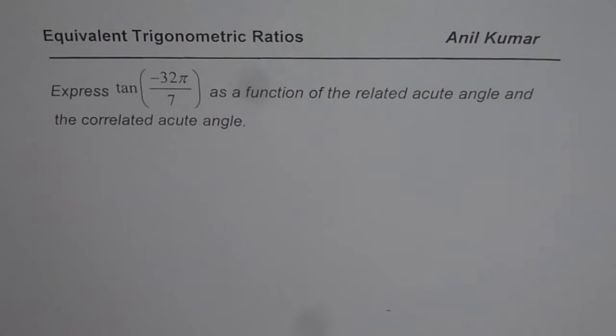Question is, express tan of minus 32π divided by 7 as a function of the related acute angle and the correlated acute angle. Mind it, you have to write this ratio tan minus 32π over 7 as a function of related acute angle and the correlated acute angle.